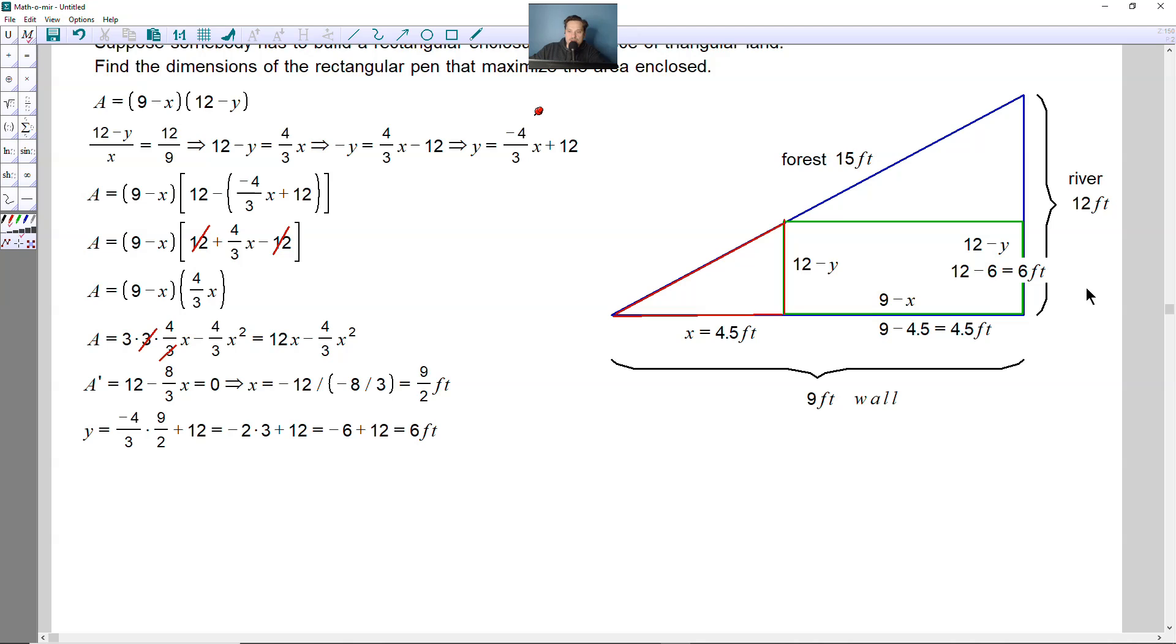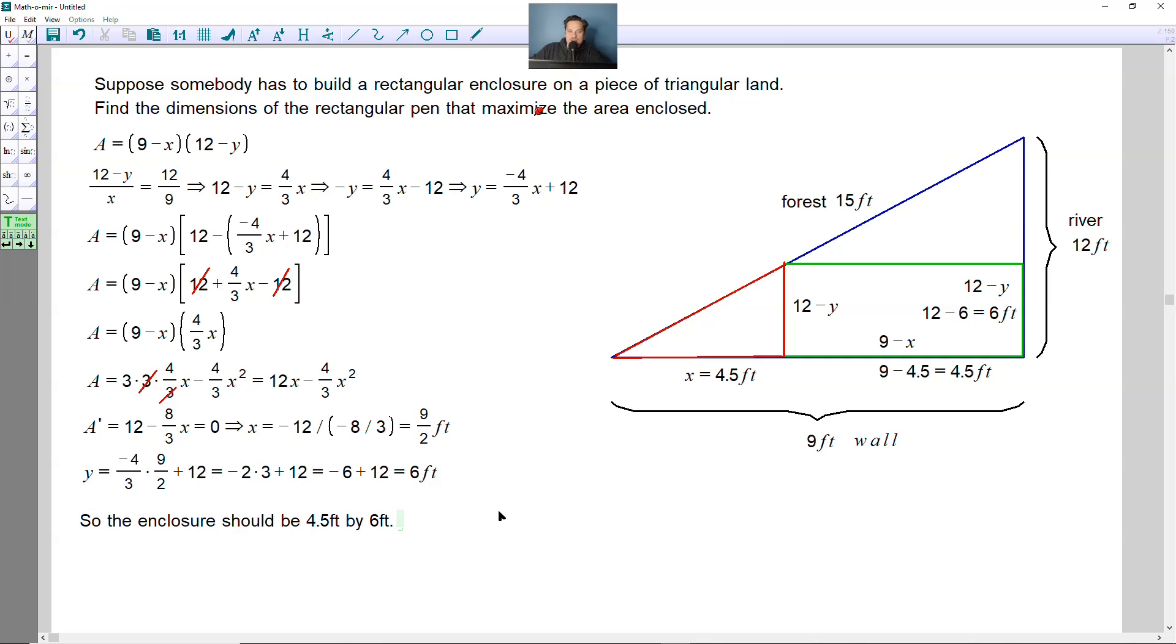So this calculation is telling you the following as a wrap up and everything: the enclosure should be 4.5 feet by 6 feet to maximize its area. And this is the whole problem. Thanks so much for watching. I'll see you in another video.